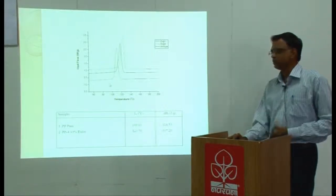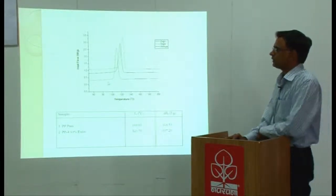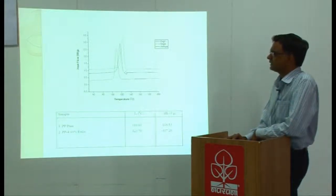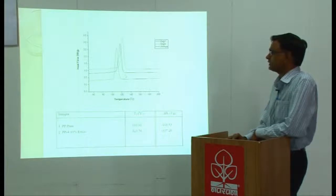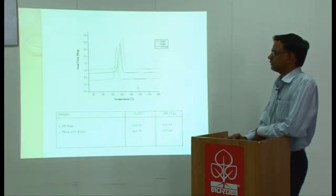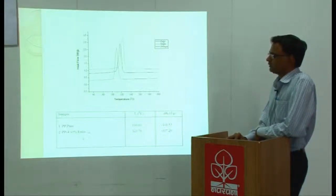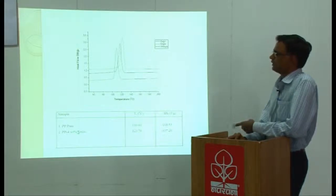This particular plot shows the DSC plot especially the cooling part which has been shown here. This gives us more information as to what happens to the crystallization temperature of polypropylene. When you add expanded graphite nanosheets, I would say at this moment expanded graphite particles, nanosheets are indeed formed.